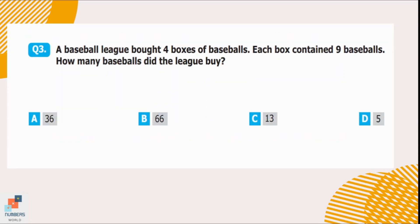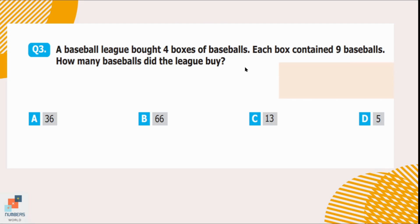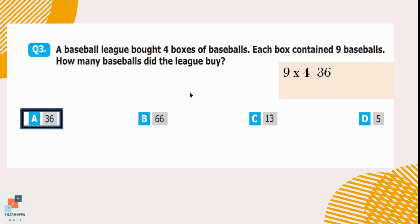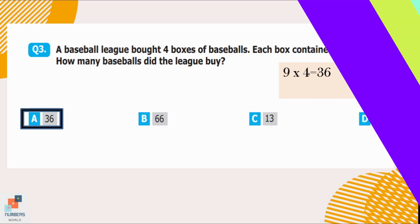Question number 3. A baseball league bought 4 boxes of baseballs. Each box contained 9 baseballs. How many baseballs did the league buy? To find the total number of baseballs, we multiply the number of boxes by the number in each box. So, 9 times 4 equals 36, which is option A. There are 36 baseballs in total.